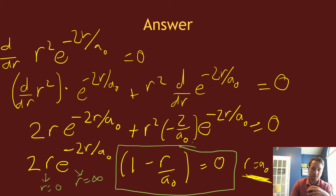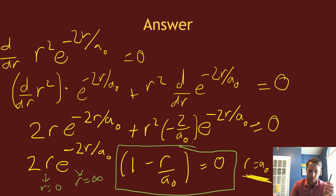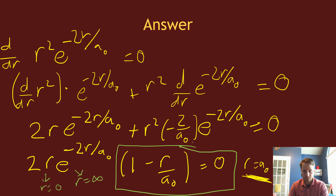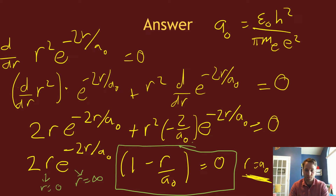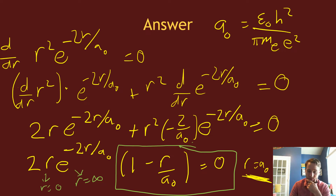a₀ is the Bohr radius, which is 0.0529 nm. Its full expression is a₀ = ε₀h²/(π m_e e²). So the most probable location to find the electron in the hydrogen 1s orbital is at the Bohr radius.